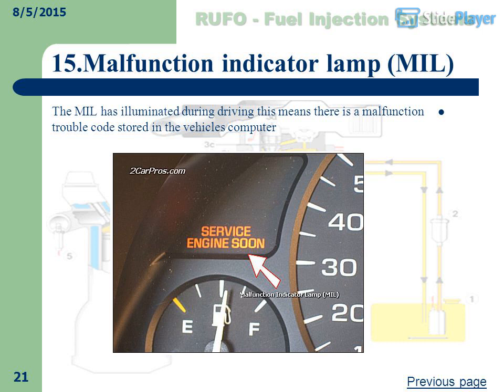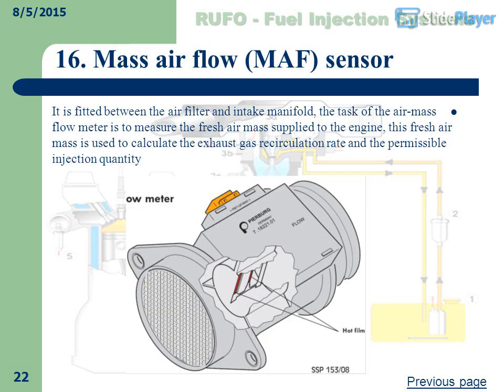Malfunction Indicator Lamp (MIL): If the MIL illuminates during driving, this means there is a malfunction trouble code stored in the vehicle's computer. Mass Airflow (MAF) Sensor: It is fitted between the air filter and intake manifold. The task of the air mass flow meter is to measure the fresh air mass supplied to the engine. This fresh air mass is used to calculate the exhaust gas recirculation rate and the permissible injection quantity.